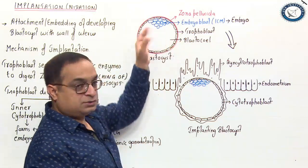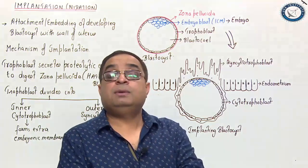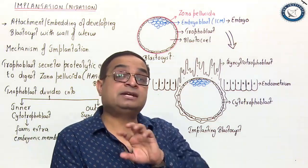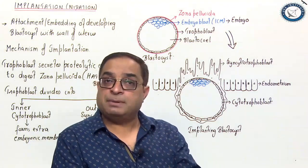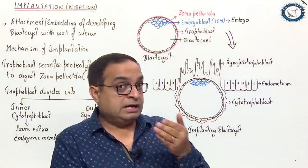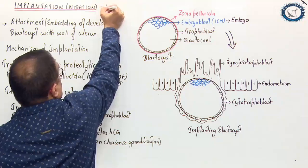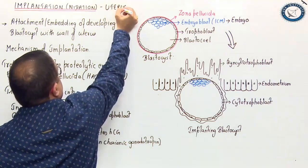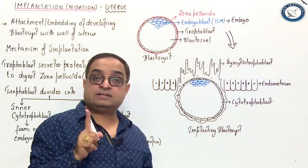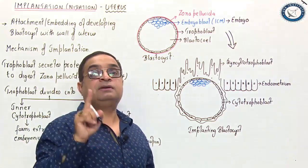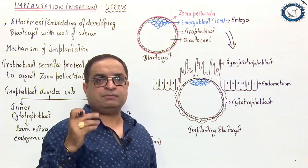When the zona pellucida dissolves, this structure can attach with the wall of the uterus. The trophoblast cells are very sticky and can attach to any maternal tissues. Zona pellucida ensures that implantation happens at the proper site, which is the uterus. The uterus is designed for implantation. If zona pellucida dissolves in the fallopian tube, that results in a very dangerous situation — tubal pregnancy, which is a type of ectopic pregnancy.